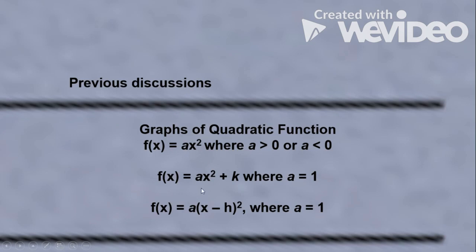In Part 2 of our discussion, we introduced the value of k. The value of k determines the movement of the parabola either upward or downward. The parabola moves upward if k is positive, and downward if k is negative.